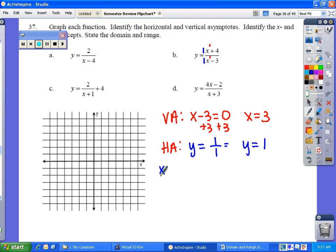Your x-intercept is only setting the numerator equal to zero. So you set x minus four equal to zero and you get x equals negative four, making your x-intercept at the point negative four zero.